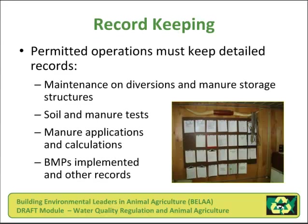Record keeping. Permitted operations must keep detailed records. Some of the most common areas that require observation and record keeping are maintenance on clean water diversions and manure storage structures, soil and manure test records, manure application records and the calculations for agronomic rates. Additionally, any best management practice (BMP) that protects water quality should be included in the records.